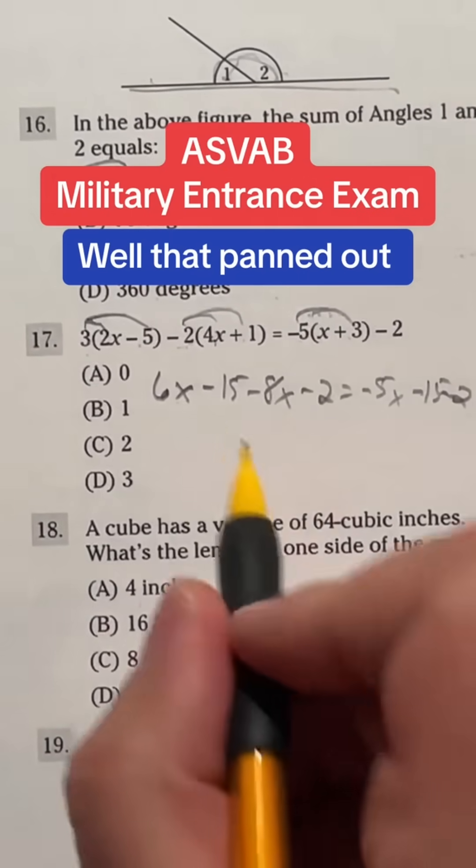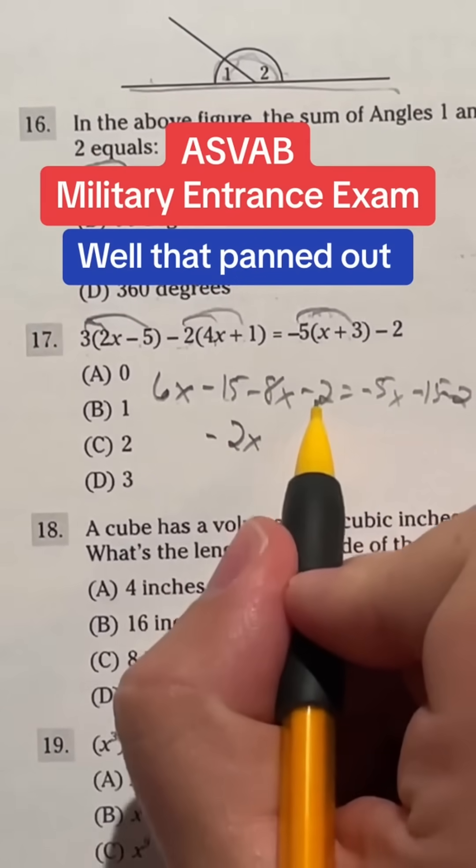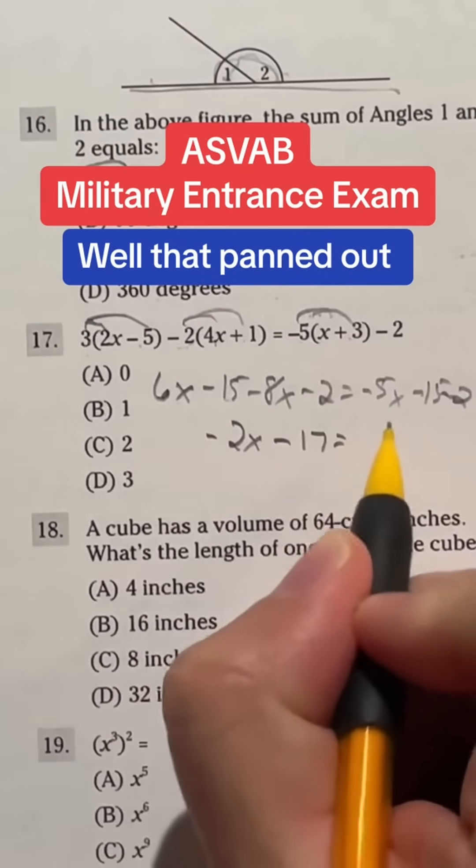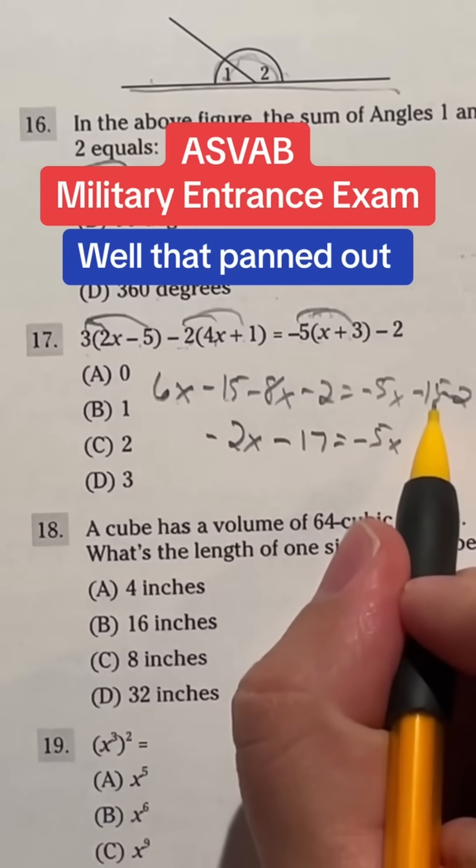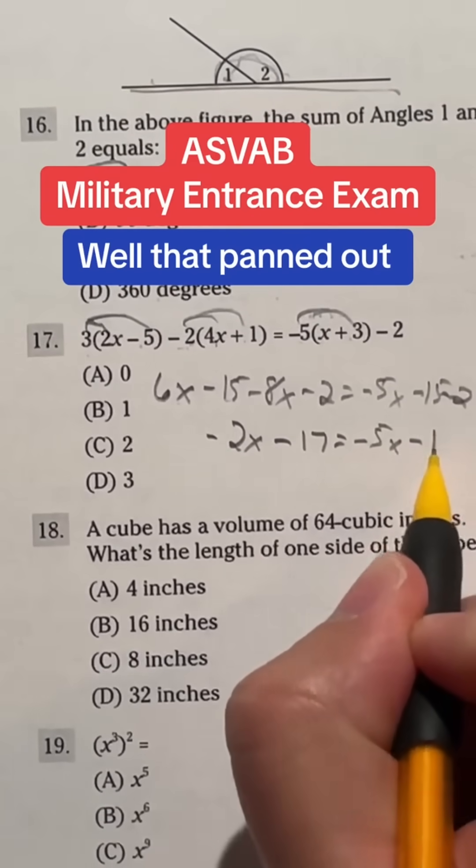Then we got combined like terms. Well, I got a six and a negative eight. That's gonna give me negative 2X. I have a negative 15 and negative two gonna give me negative 17. I still have a negative 5X over here. And then I still have that negative 15, negative two for another negative 17.